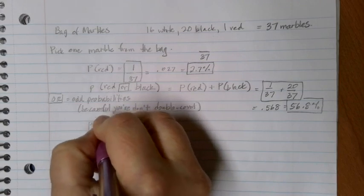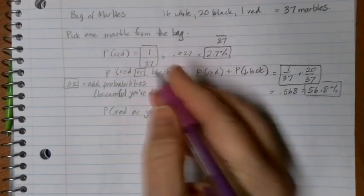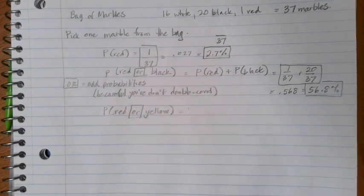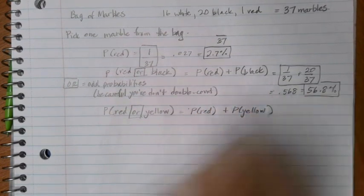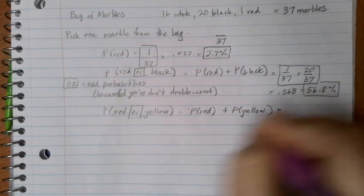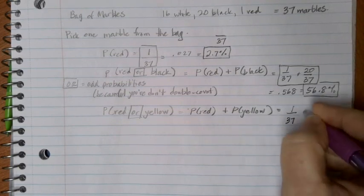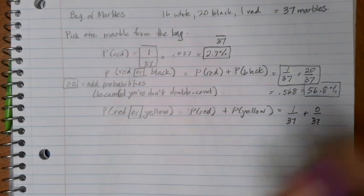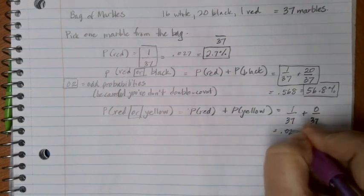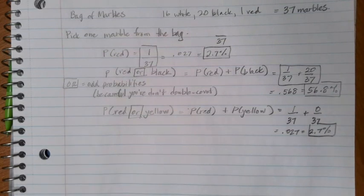Let's consider the probability of picking a red marble or a yellow marble. I see that word 'or', so I can either look at getting a red marble or I can look at getting a yellow marble, and I can add those probabilities together. The probability of picking a red is 1 out of 37, plus the probability of picking a yellow — well, there are no yellow marbles, so that's just 0 out of 37. If I add those together and divide, I end up with 0.027, or a 2.7% chance. It ends up being the same as just the chance of picking that red marble.